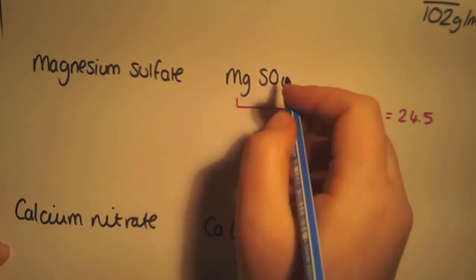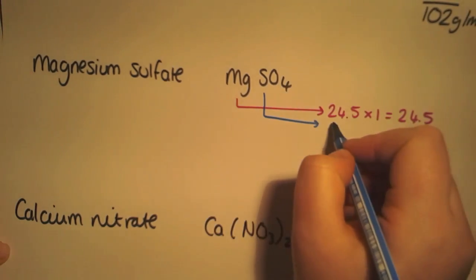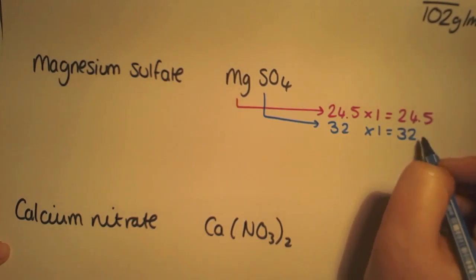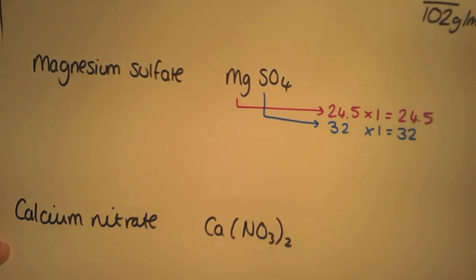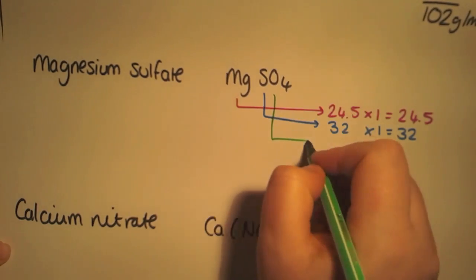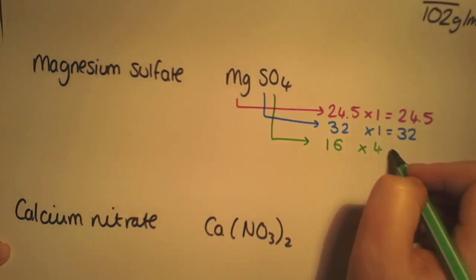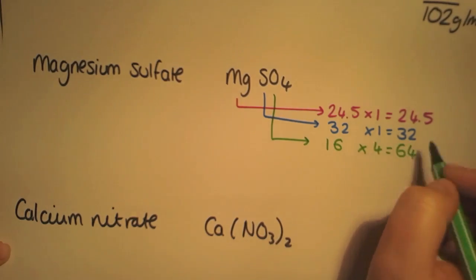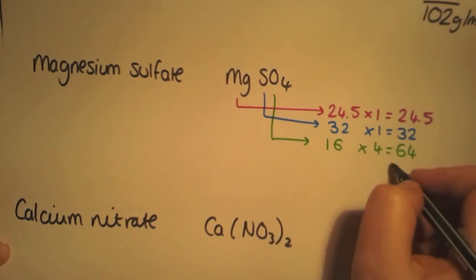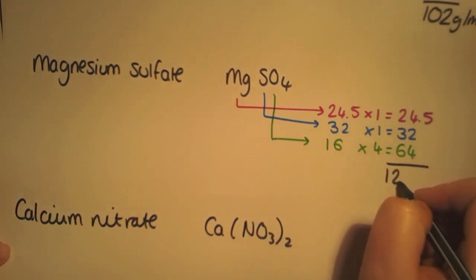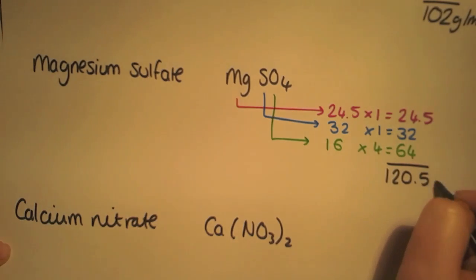You have sulphur, with a relative atomic mass of 32, and again we have one. And then finally, oxygen, as we've seen above, has a relative atomic mass of 16, this time times 4, which gives us a total of 64. If we add all of this up, we get a gram formula mass for magnesium sulphate of 120.5 grams per mole.